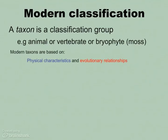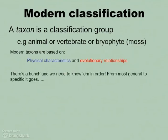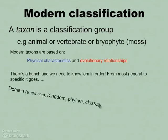By looking at these physical characteristics and evolutionary relationships, we've developed a Linnaean system that includes these major groups: the domain, which is a relatively new one, broken up into kingdoms, which are broken up into phyla, which are broken up into classes, orders, family, genera, and species.